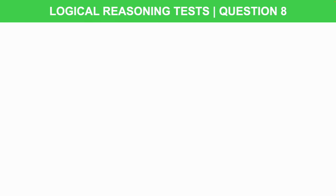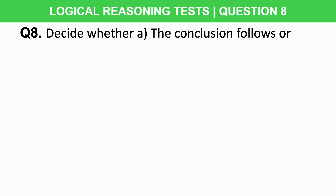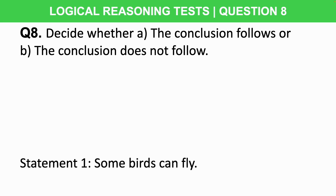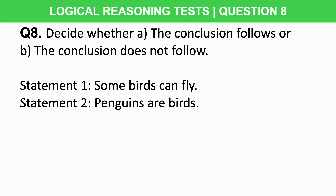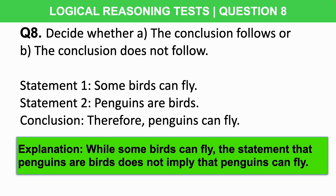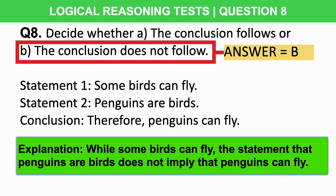The metal logical reasoning test is designed to assess an individual's logical reasoning and problem-solving skills. These tests are commonly used by employers to evaluate how well candidates can analyze information, make decisions, and solve complex problems. Here's a question: decide whether A) the conclusion follows, or B) the conclusion does not follow. Statement one: some birds can fly. Statement two: penguins are birds. Conclusion: therefore, penguins can fly. While some birds can fly, the statement that penguins are birds does not imply that penguins can fly. The correct answer is B — the conclusion does not follow.